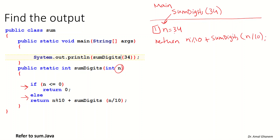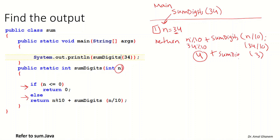Currently the value of n is 34. So 34 modulus 10 — the meaning of modulus is remainder — gives us 4. So we have 4 plus a call to someDigit with n / 10. The current value of n is 34, so 34 / 10: when we divide integer by integer we get an integer, so the result is 3. So I call the method and send the value 3. We return 4 plus someDigit(3).